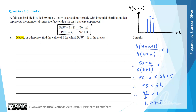45/6 equals 7.5 as a decimal, so we investigate K values around 7 to 8. We should be able to conclude which K value gives the greatest probability. Starting with K equals 7: the ratio becomes probability(W=8) divided by probability(W=7), which equals (50 minus 7) divided by 5 times (7 plus 1), giving 43/40.